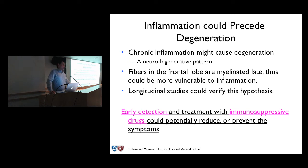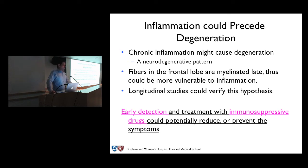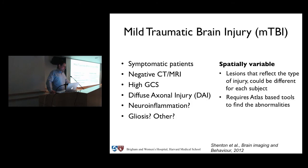The important clinical implication is that if neuroinflammation is the primary pathology and can be detected early, we could treat it and potentially prevent the symptoms that accompany later stages of schizophrenia.